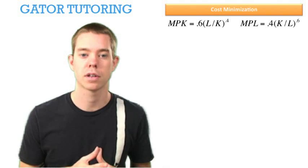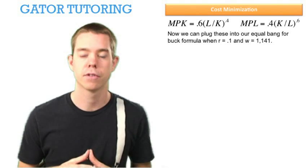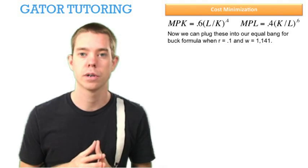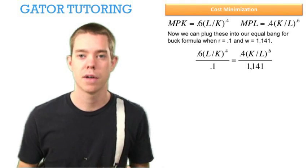Now that we've solved for the marginal product of capital and labor, we can go back to our equal bang for buck formula, where R = 0.1 and W = 1,141. We plug in all our components, and now we need to do some algebra.